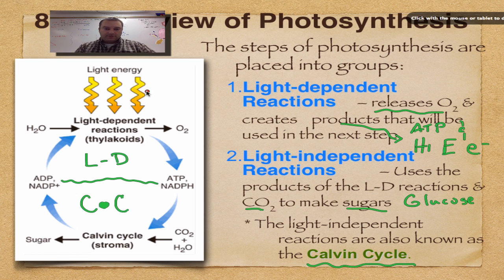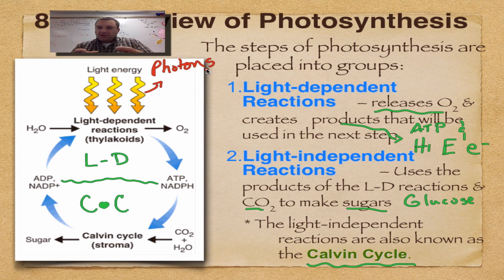A couple of other items I want to add. Light energy comes in the form of photons - call it a packet of light energy, that's all it means. Now during the light dependent reactions the water is broken apart using light and that's going to produce oxygen - remember that's the waste product. And then we have NADPH - that's basically high energy electrons.